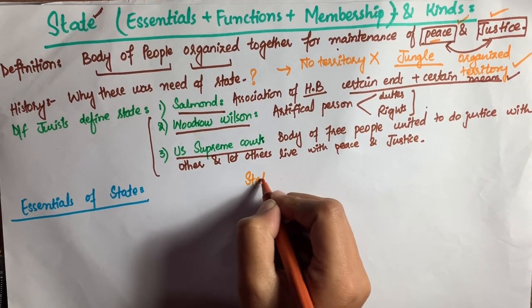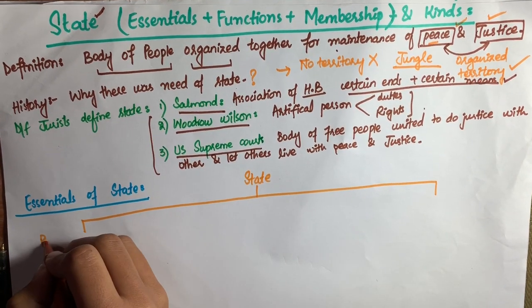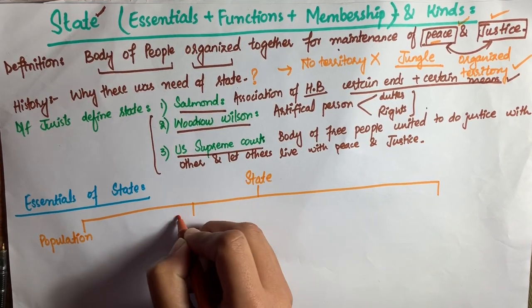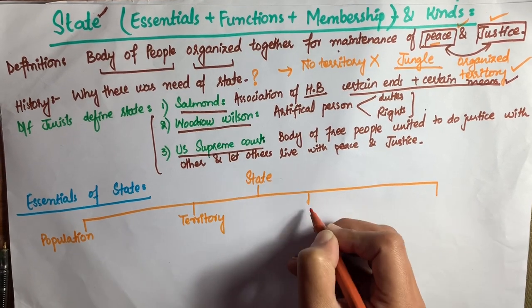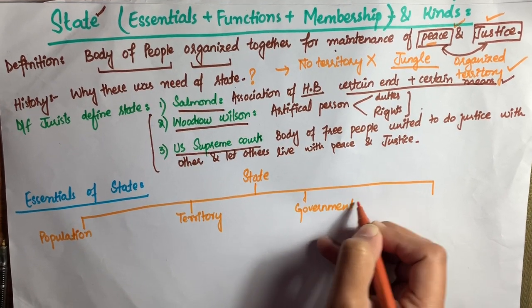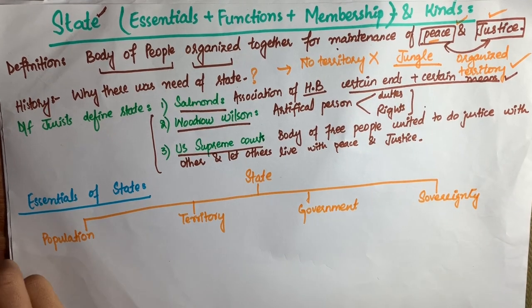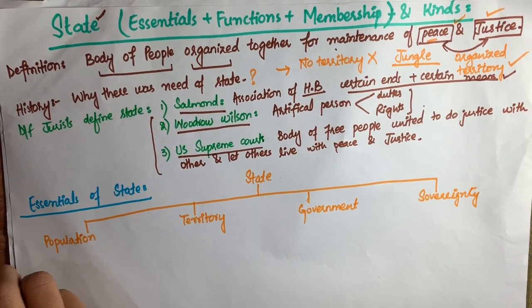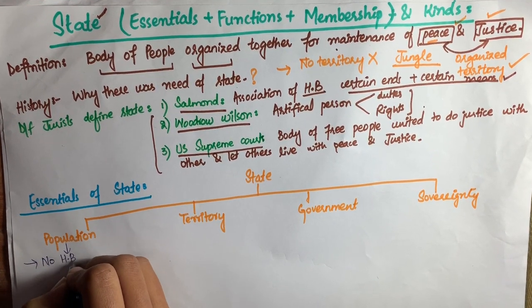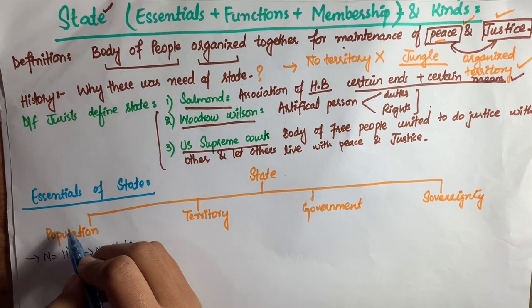Moving towards the essentials of state, there are four main essentials: number one, population; number two, territory; number three, government; and number four, sovereignty. We will discuss these essentials one by one.